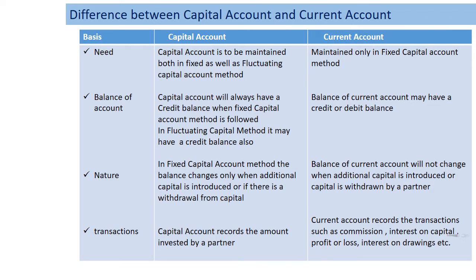The capital account records the amount invested by a partner in the firm, both in the fixed capital method and the fluctuating capital method. The current account, on the other hand, records transactions like drawings, interest on drawings, interest on capital, salary, commission, profit or loss, etc.